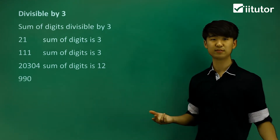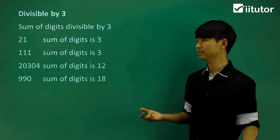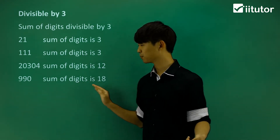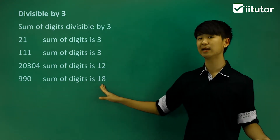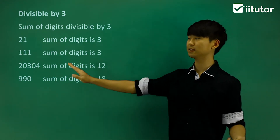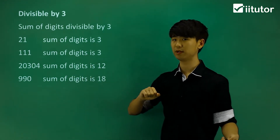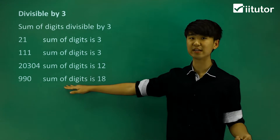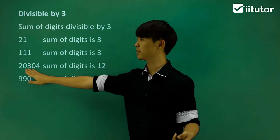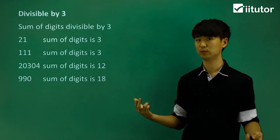990: the sum of digits here is going to be 18, so 9 plus 9 plus 0. And 18 again is divisible by 3, then that means 990 is divisible by 3. So we're considering the sum of digits to see whether or not the actual number is divisible by 3.